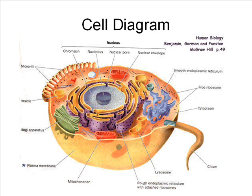The nucleus of a eukaryotic cell contains the cell's DNA and is thus able to control and direct the activities of the cell. The cell or plasma membrane is a selectively permeable structure which helps to control the substances that enter and exit the cell, helping the cell to maintain homeostasis. The mitochondria, sometimes referred to as the powerhouses of the cell, carry out cellular respiration and make the needed ATP for the cell.